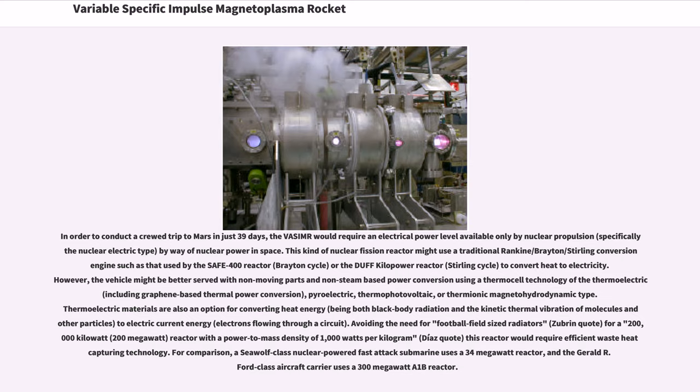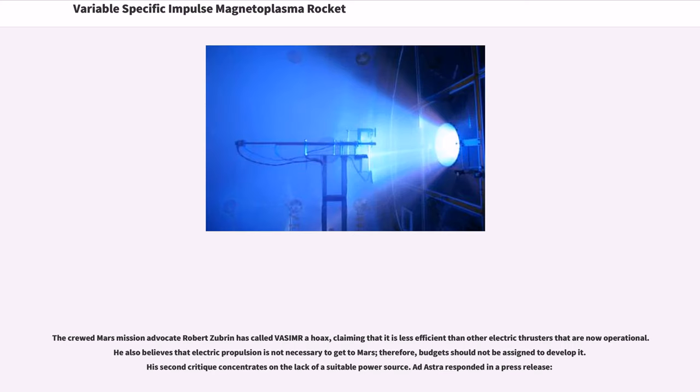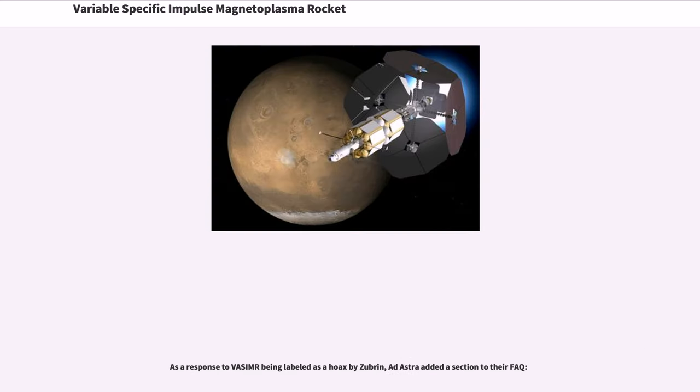The crewed Mars mission advocate Robert Zubrin has called VASIMR a hoax, claiming that it is less efficient than other electric thrusters that are now operational. He also believes that electric propulsion is not necessary to get to Mars; therefore, budgets should not be assigned to develop it. His second critique concentrates on the lack of a suitable power source. Ad Astra responded in a press release. As a response to VASIMR being labeled as a hoax by Zubrin, Ad Astra added a section to their FAQ.